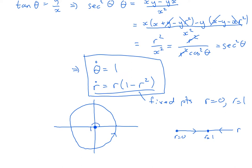So if the initial radius is between 0 and 1, r will increase and tend to 1. So I get solutions that look like this, with theta increasing at a constant rate, spiralling out, and if r starts bigger than 1,